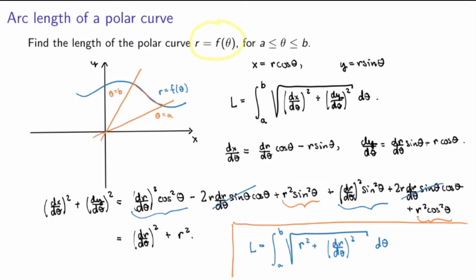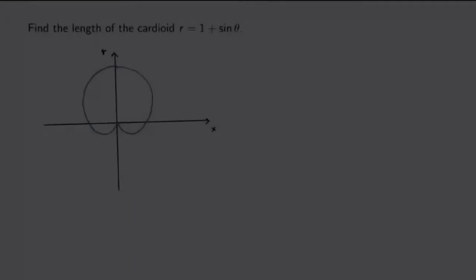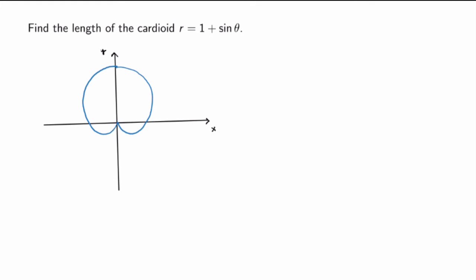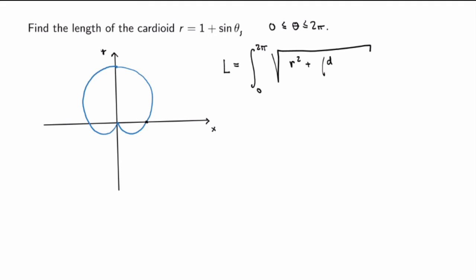So we get a nice formula for the arc length of a polar curve: the integral from a to b of the square root of r² + (dr/dθ)², integrated with respect to theta. Remember that r is itself a function of theta. Let's apply that to an example: find the length of the cardioid r equals 1 plus sinθ. We want the length of the whole curve, integrating from theta equals 0 to theta equals 2π.